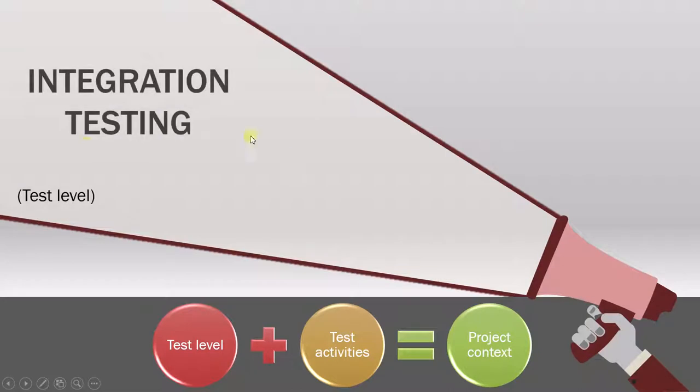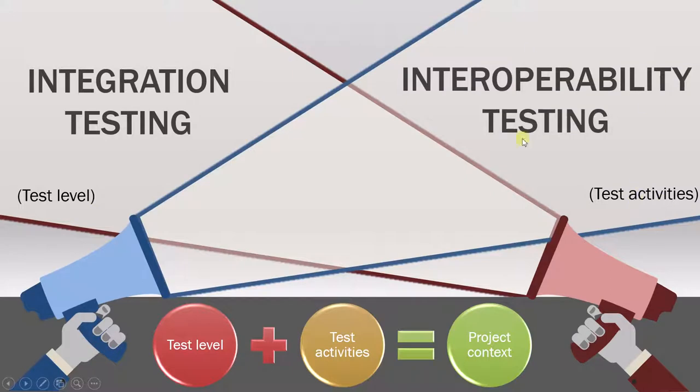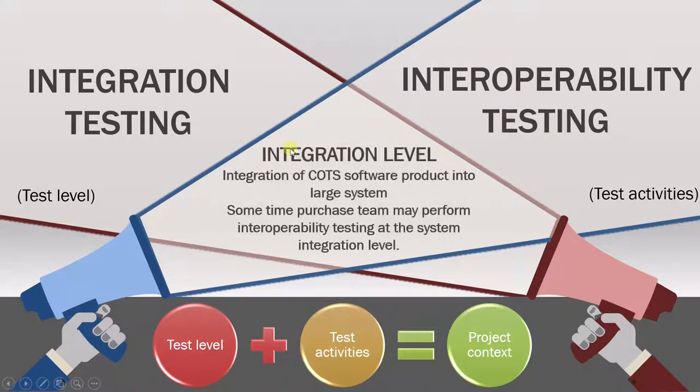Now here's the example. Suppose we have to do integration testing for a test level and our testing activity is interoperability testing. We want to combine the two to achieve our project context. So let's look at this project context that requires the combination of these test levels and activities.